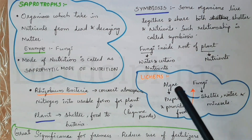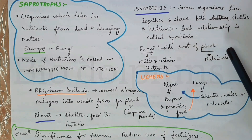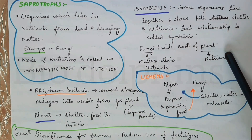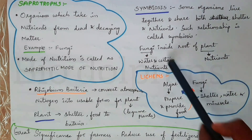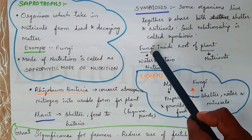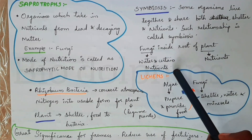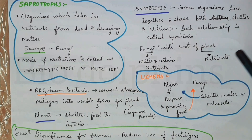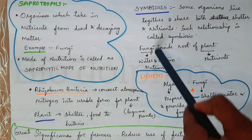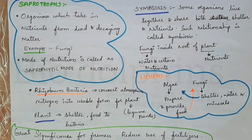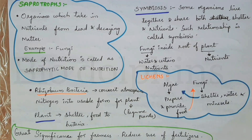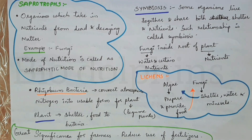In the symbiotic relationship between fungi and a plant, fungi help the plant absorb water and certain nutrients. In return, the plant provides food to the fungi. One example of symbiosis is lichens, which are a symbiotic association of algae and fungi.